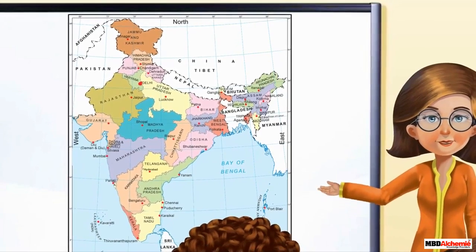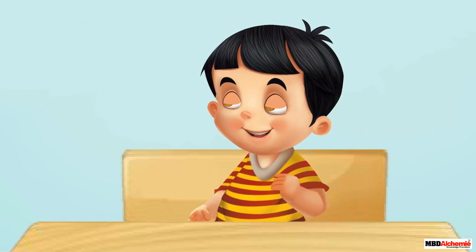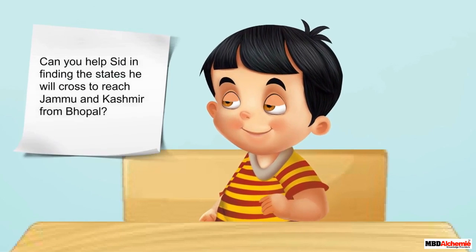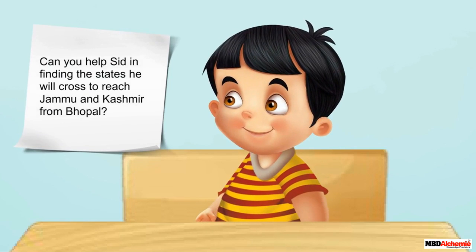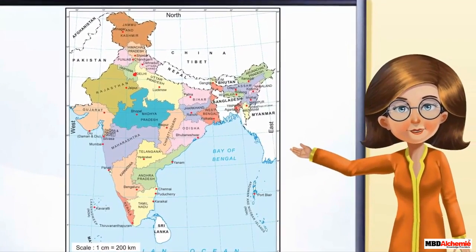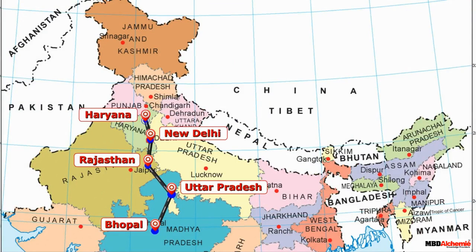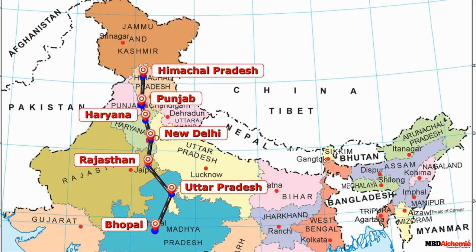Which states will you cross to reach Jammu and Kashmir from our city? Let us see the states Sid will cross to reach Jammu and Kashmir. He will start from Bhopal, cross Uttar Pradesh, Rajasthan, New Delhi, Haryana, Punjab, Himachal Pradesh, and then he will enter the state of Jammu and Kashmir. Then finally, he will reach Shrinagar.